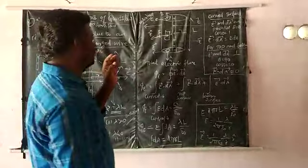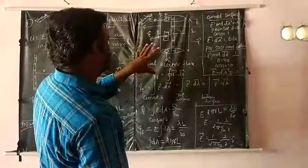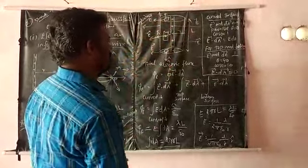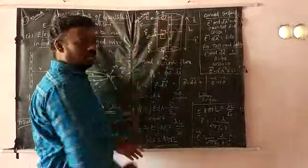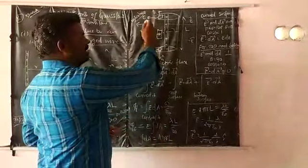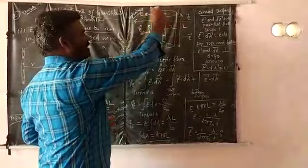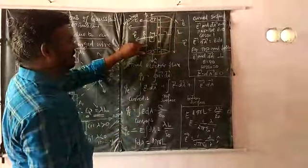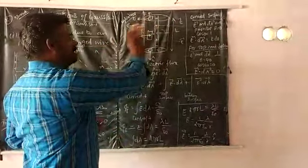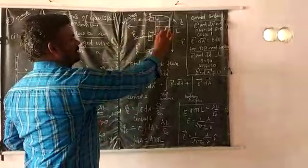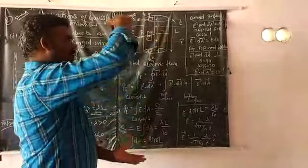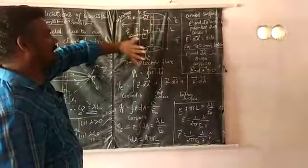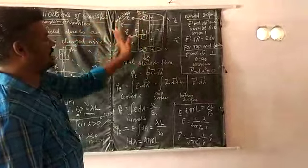To find the total electric field, we choose a cylindrical Gaussian surface around the charged wire. This is a linearly positively charged wire. We choose a cylindrical Gaussian surface based on the symmetry — this is an imaginary surface. The Gaussian surface has three parts: the top circular surface, the bottom circular surface, and the curved cylindrical surface.